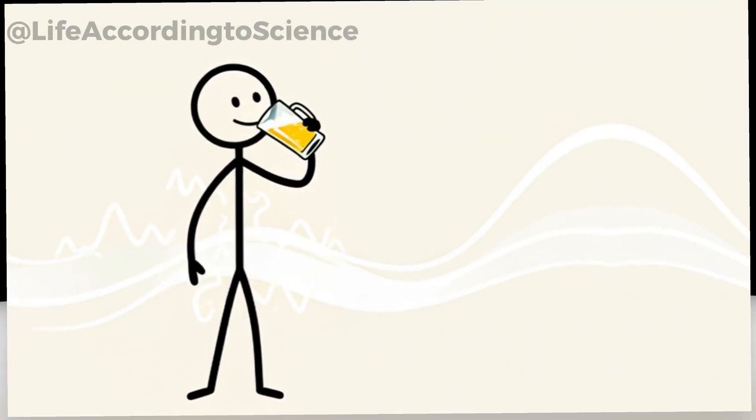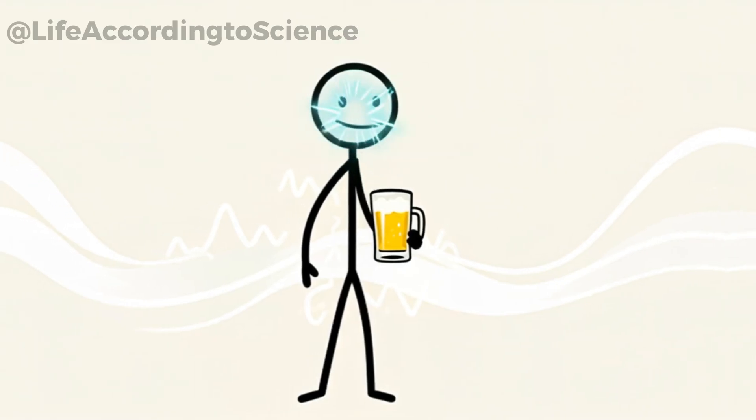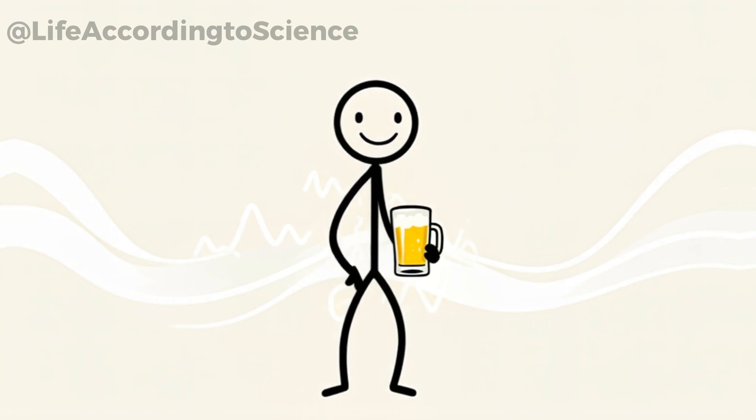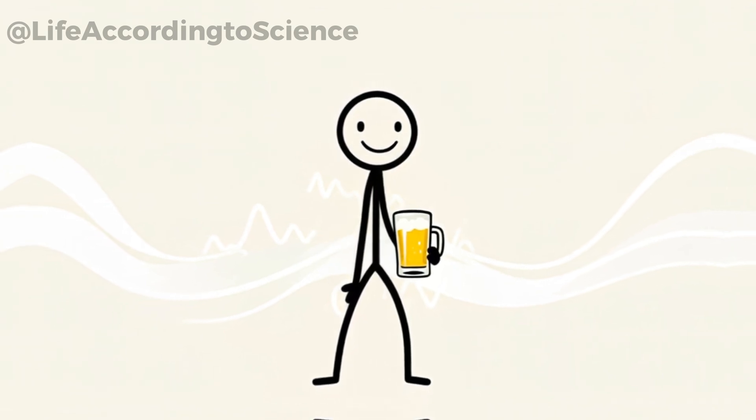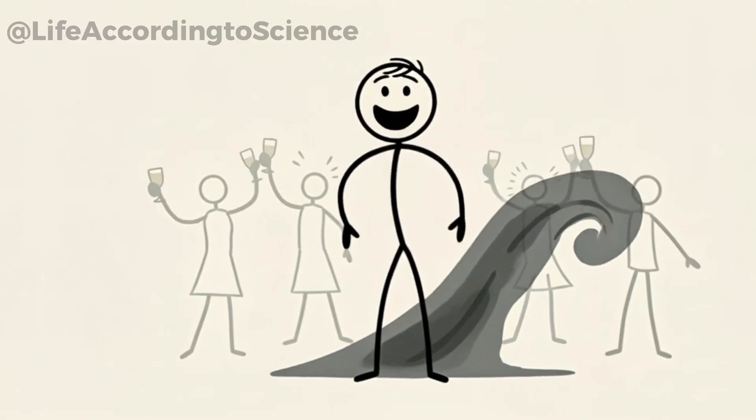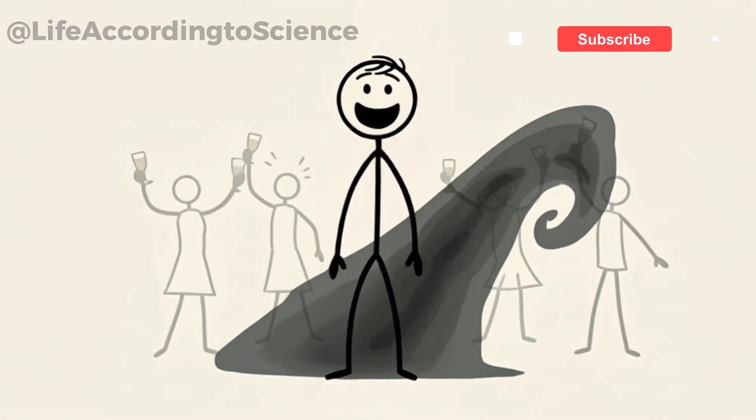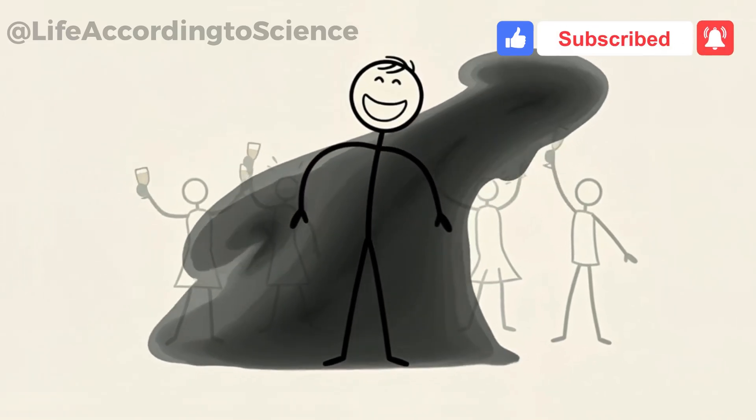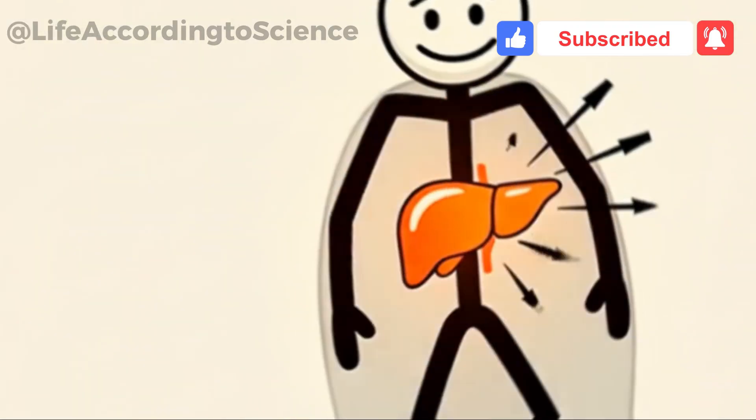Within minutes, alcohol enters your bloodstream and starts to alter brain chemistry. Dopamine rises, making you feel more relaxed, social, and even a bit euphoric. It's no wonder people describe it as a social lubricant. But this positive sensation is short-lived, a temporary mask that hides what's happening under the surface.